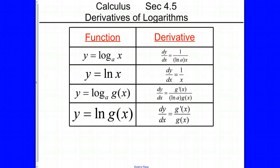Hello, everybody. This is the notes for calculus, section 4.5. What we've been talking about all of chapter 4 is finding the derivatives of different types of functions. This is the last section that we're going to do dealing with this kind of stuff — finding the derivatives of logarithmic functions.